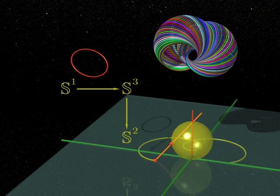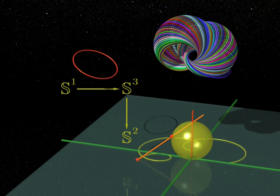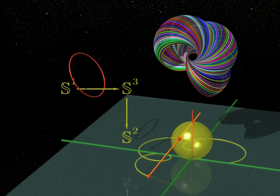In this way, we get a projection from the three-sphere to the two-sphere. Complicated, isn't it?